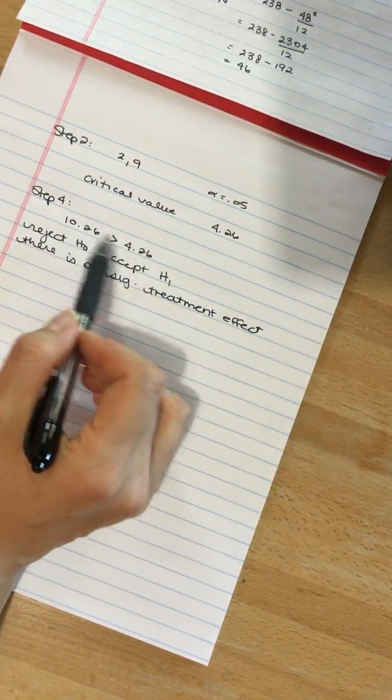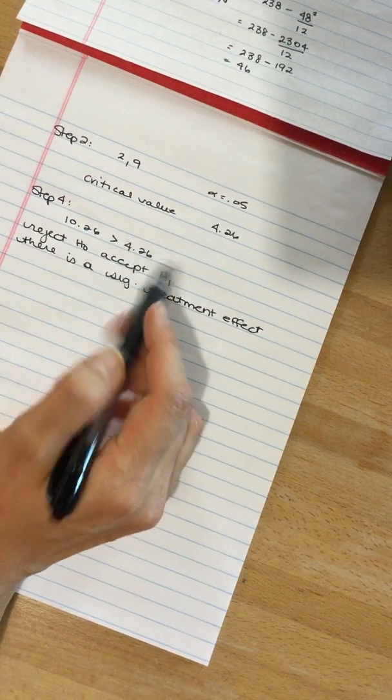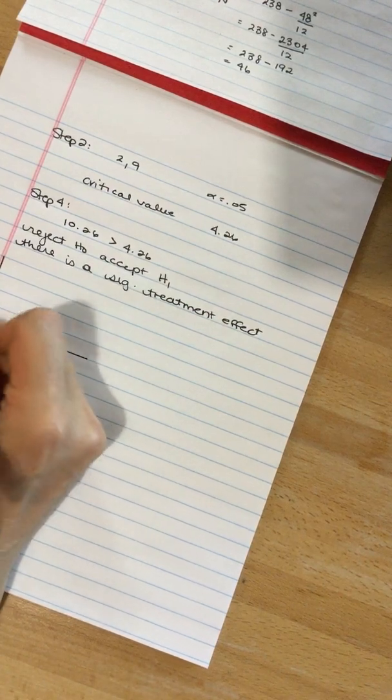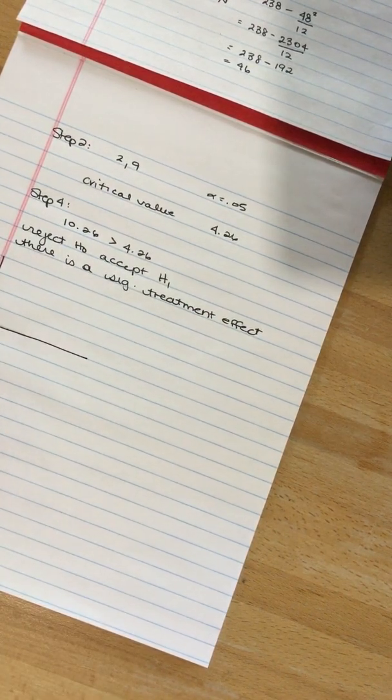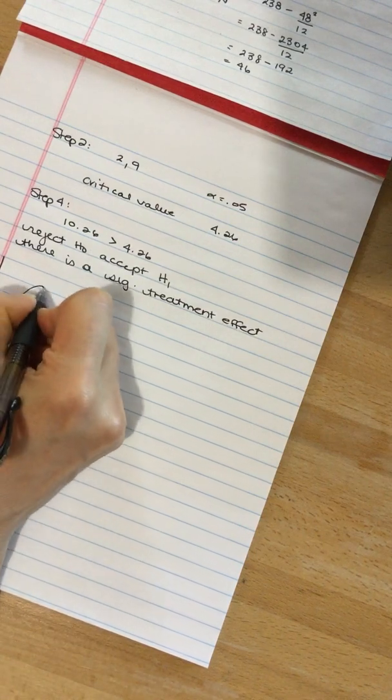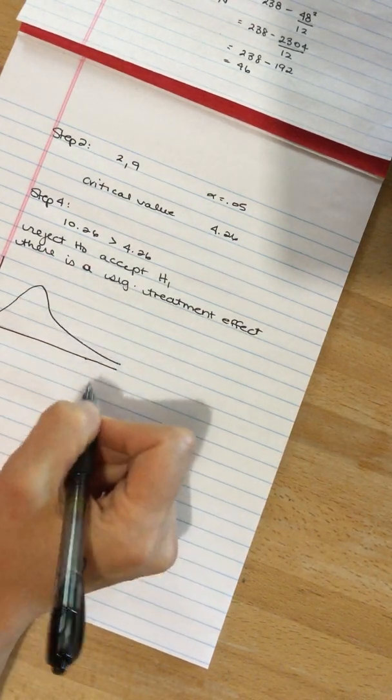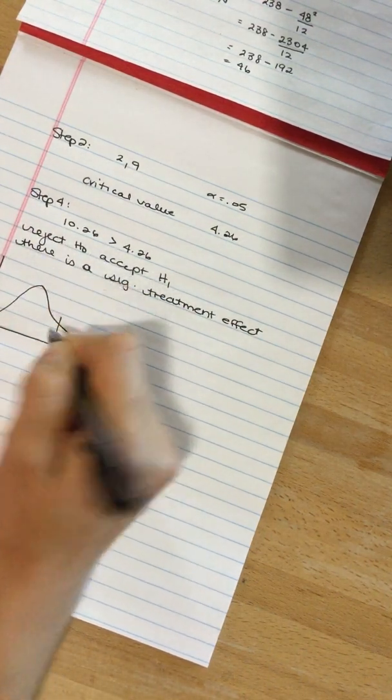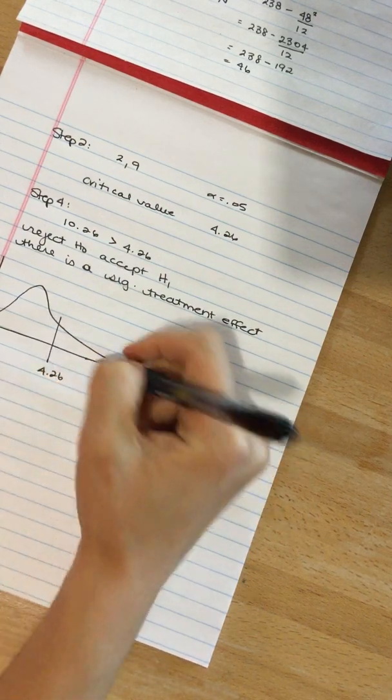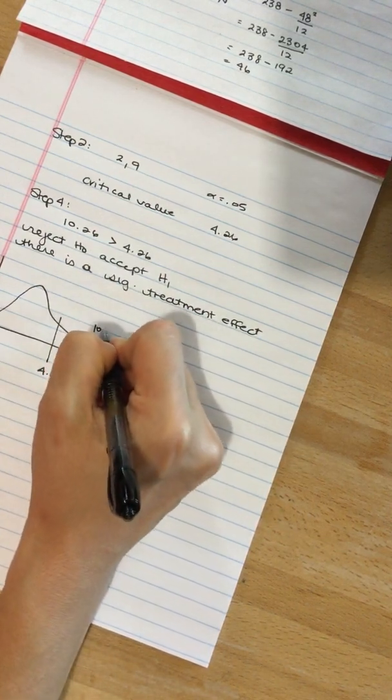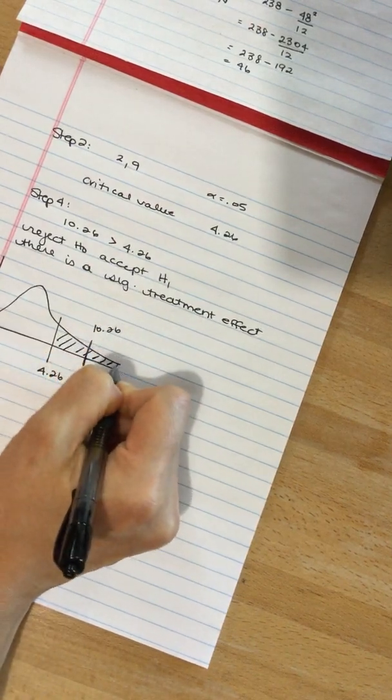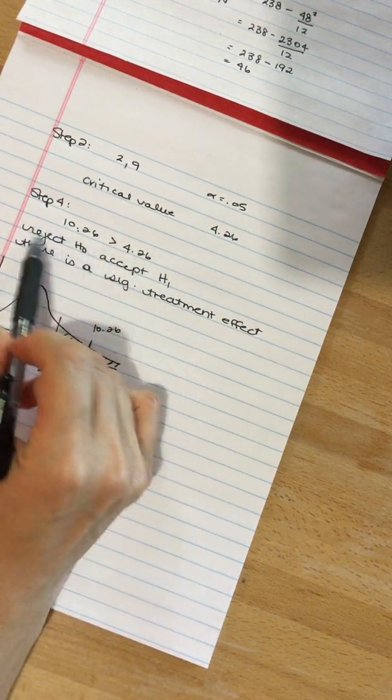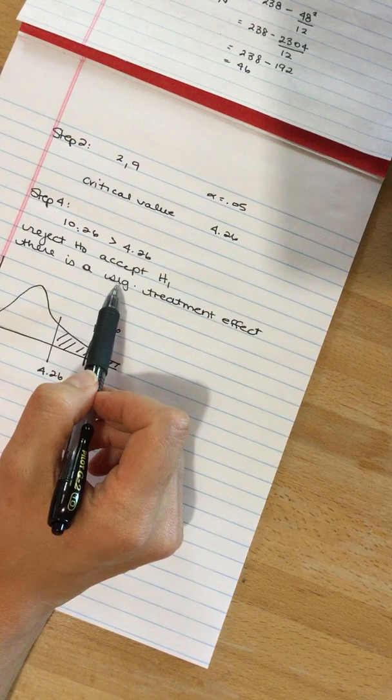And our evidence is that 10.26 is larger than 4.26. The F distribution is not a normal curve, it looks a little bit different. It's kind of like this. It's a little bit harder for me to wing. Our critical value is here and the value we calculated is somewhere out here. Out here is our critical region. So the value we calculated is in the critical region which means we reject the null, we accept the alternate, there is a significant treatment effect.